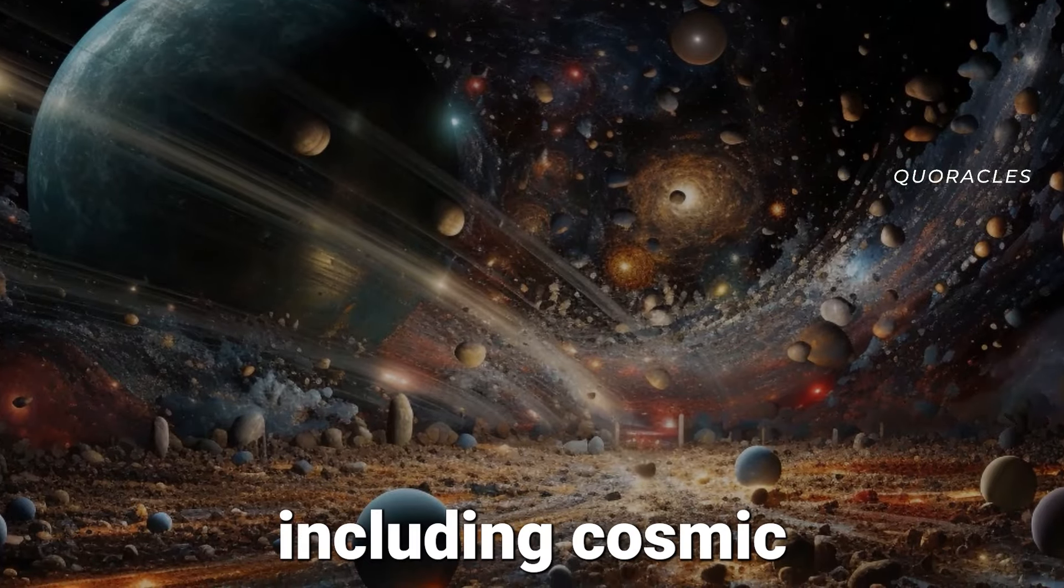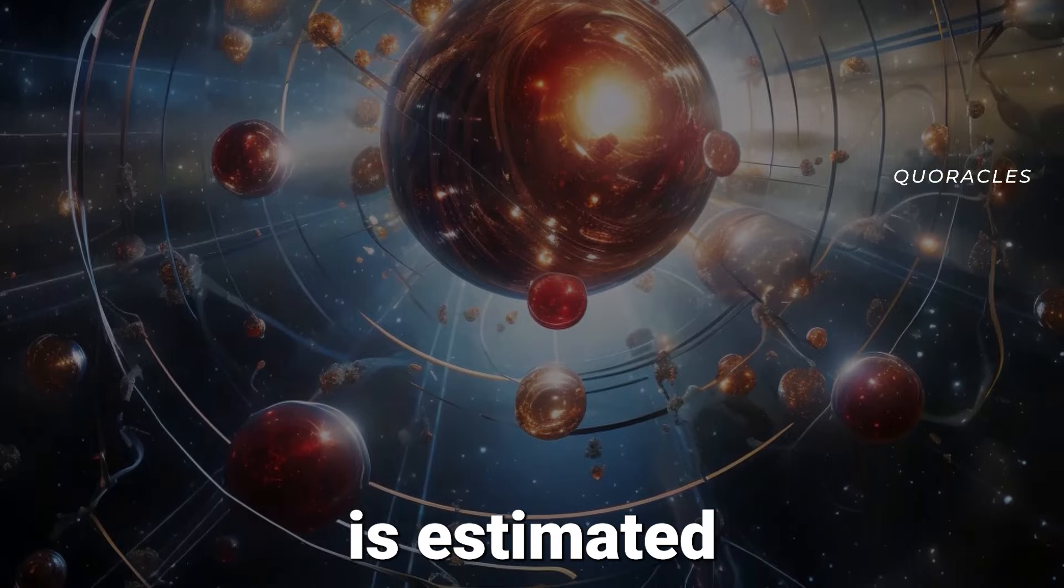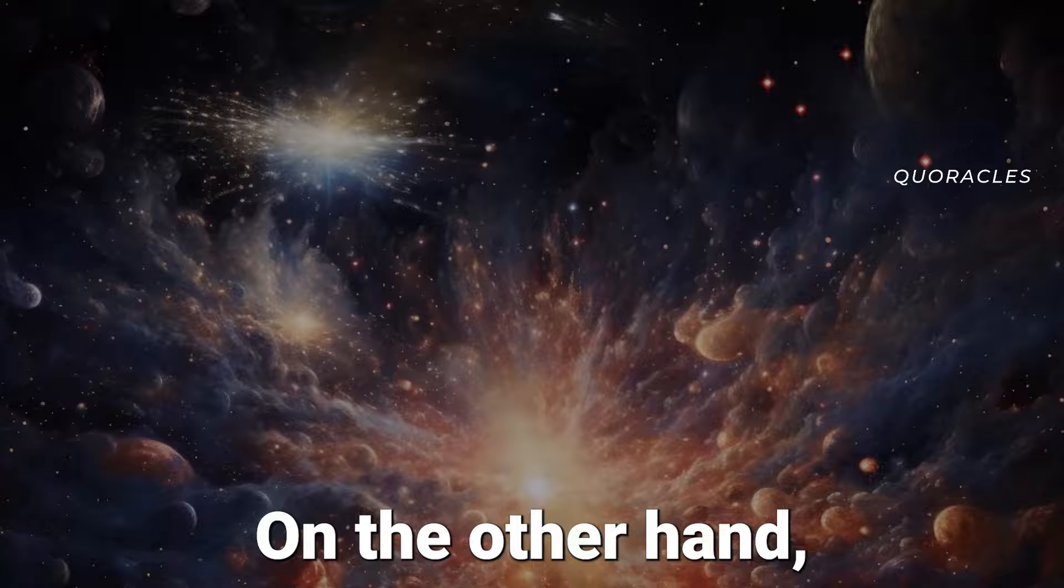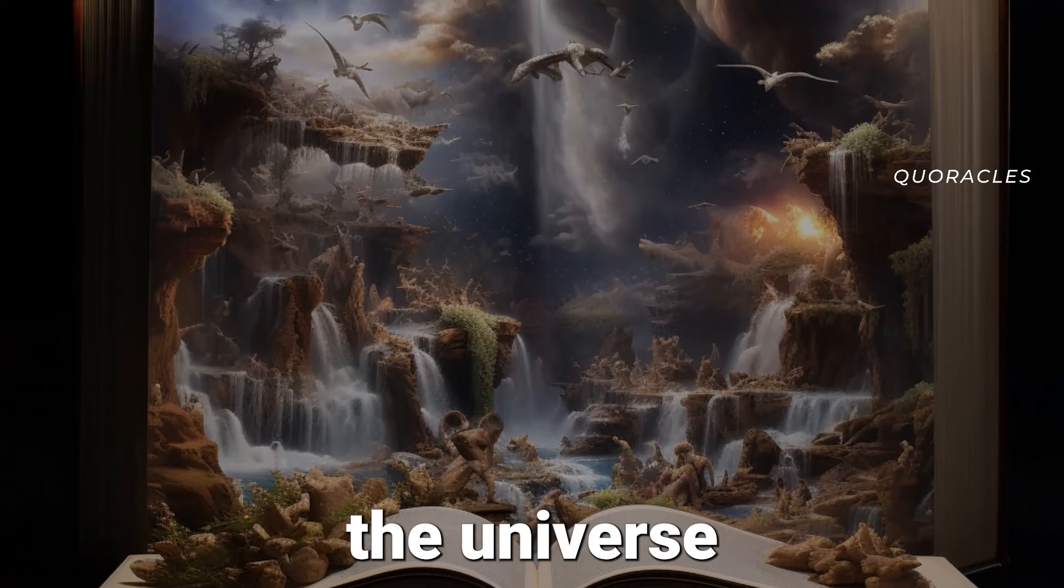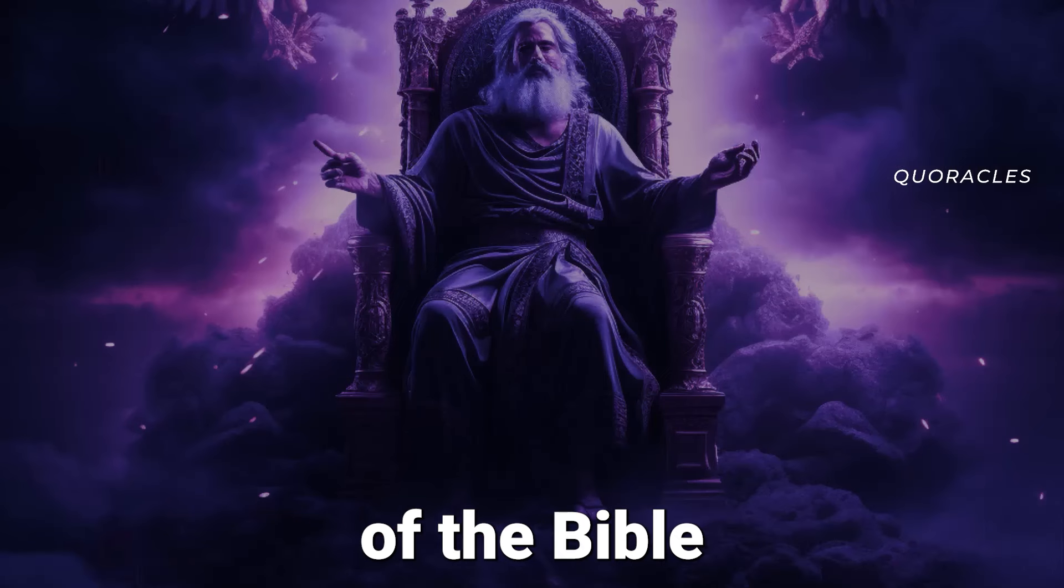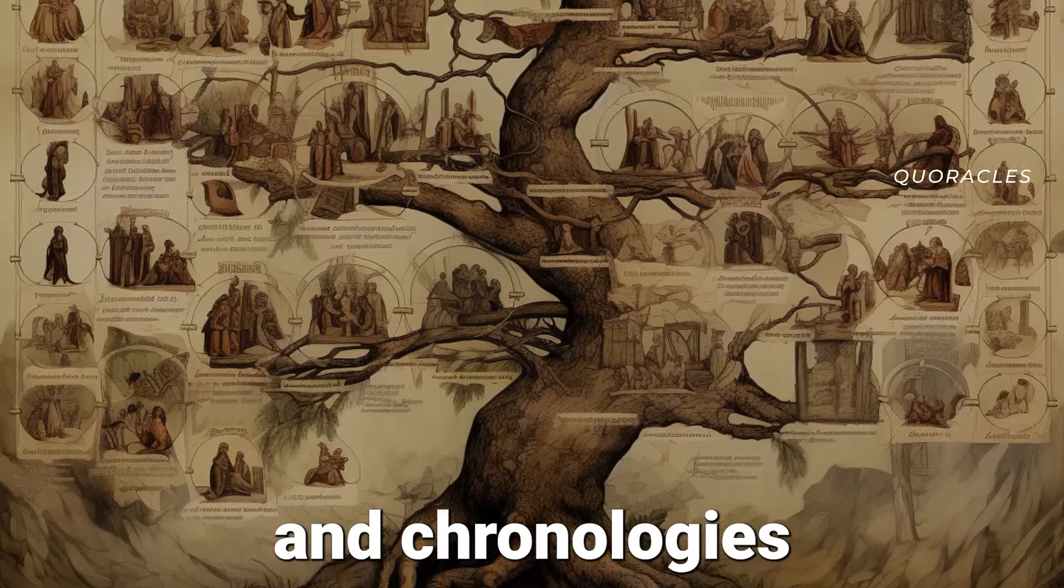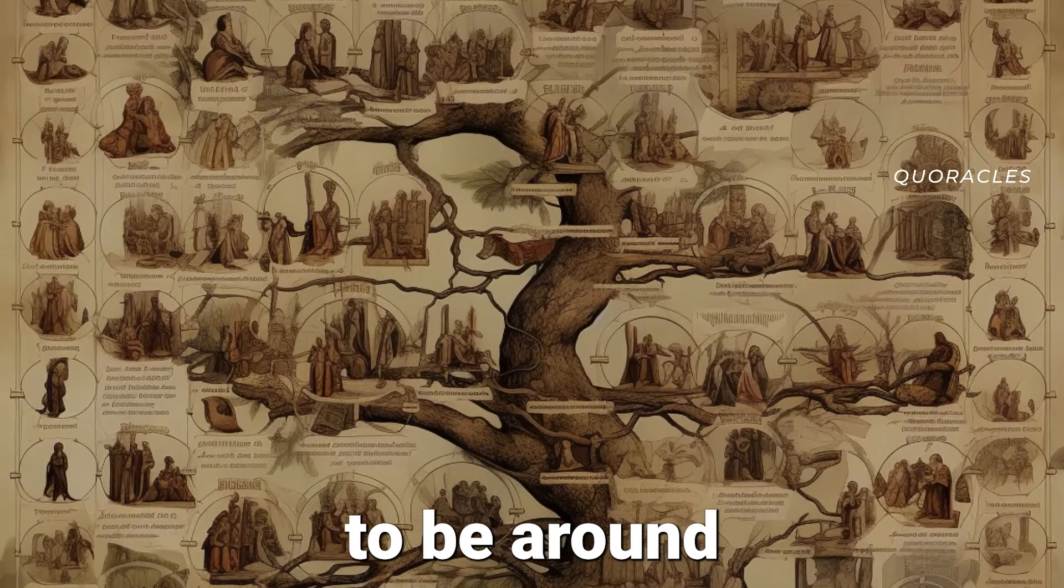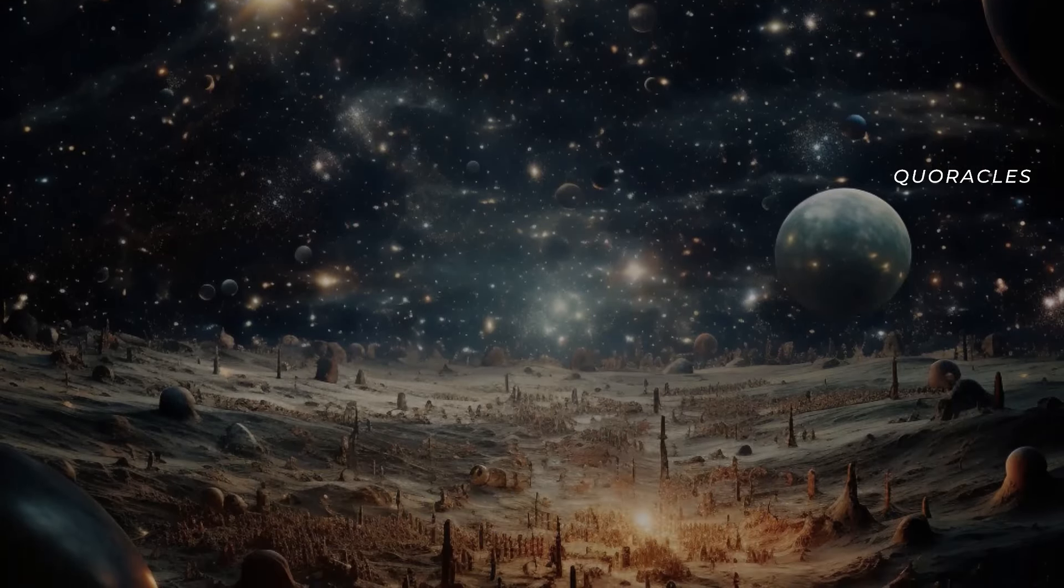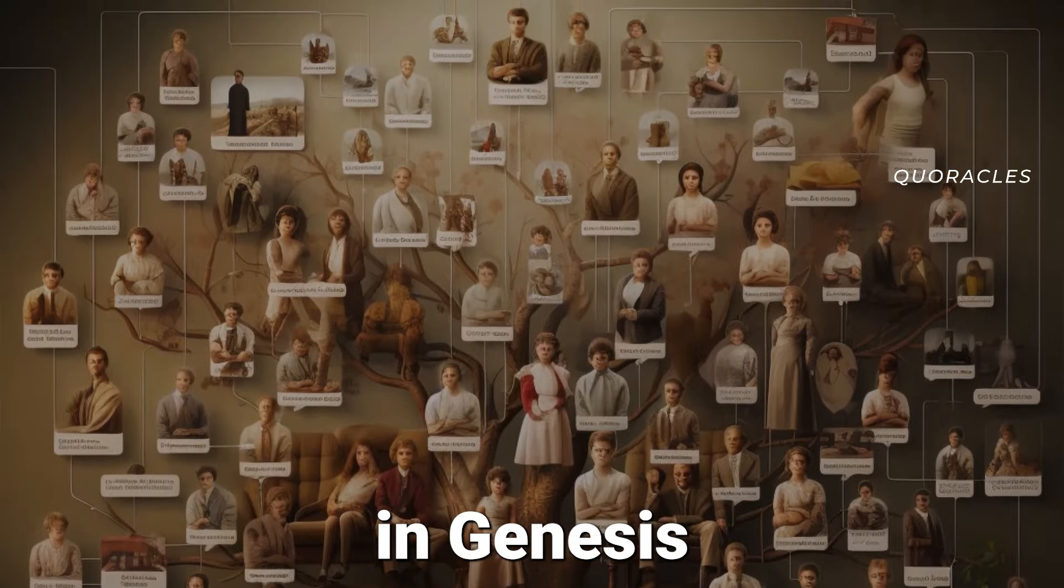The age of the universe according to the prevailing scientific consensus, which is admittedly based on extensive observational evidence including cosmic microwave background radiation and the expansion of the universe, is estimated to be approximately 13.8 billion years. On the other hand, the book of Genesis records that God created the universe and everything in it in six days. Some interpretations of the Bible calculate the age of the earth and the universe, based on the genealogies and chronologies provided in the Bible, to be around 6,000 to 10,000 years old. Where does this vast difference come from?